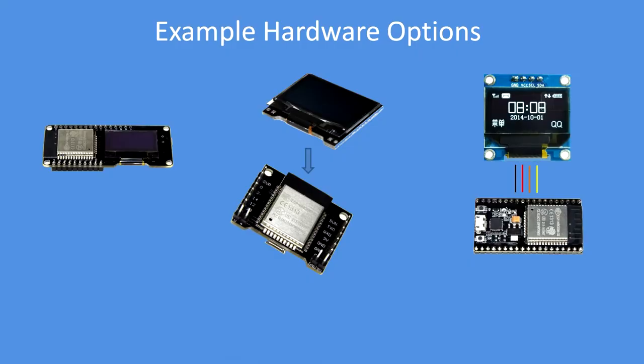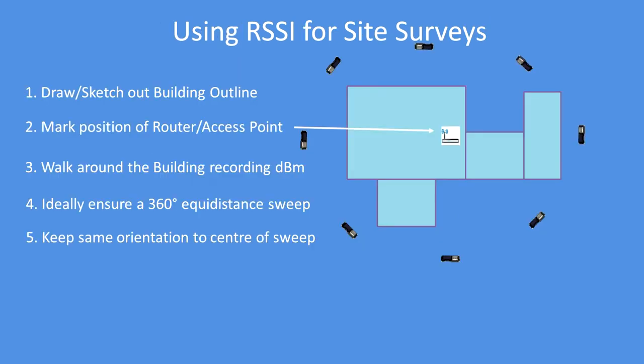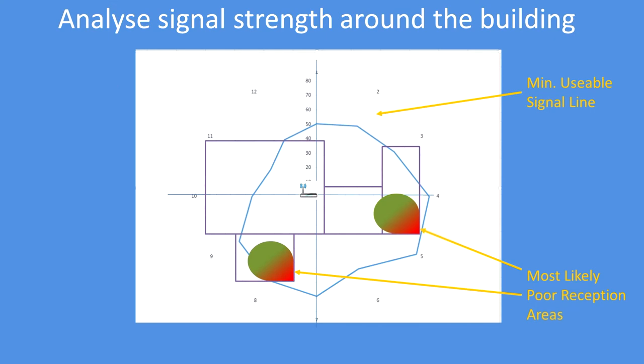I'll go through hardware options I considered, how to interpret receive signal strength indications, how to conduct a site survey, and then how to interpret the results by plotting the signal strength around the property. To begin with, here's a unit demonstration.